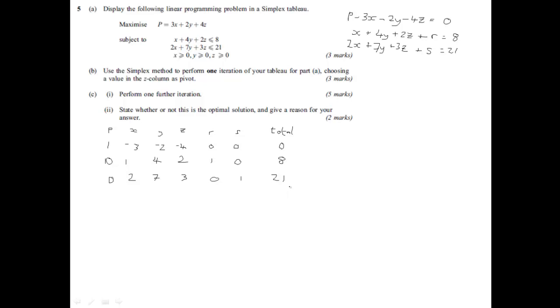For part b, use the simplex method to perform one iteration, choosing a value in the z column as a pivot. So we've got the z column here. We divide the row total by the values in the column underneath the objective function line. So the first thing we do is we divide 8 by 2, which obviously gives us 4, and then 21 divided by 3 gives us 7. And obviously the smallest of those is the 2. So indicate that by circling it, and that is our pivot value, this is our pivot row.